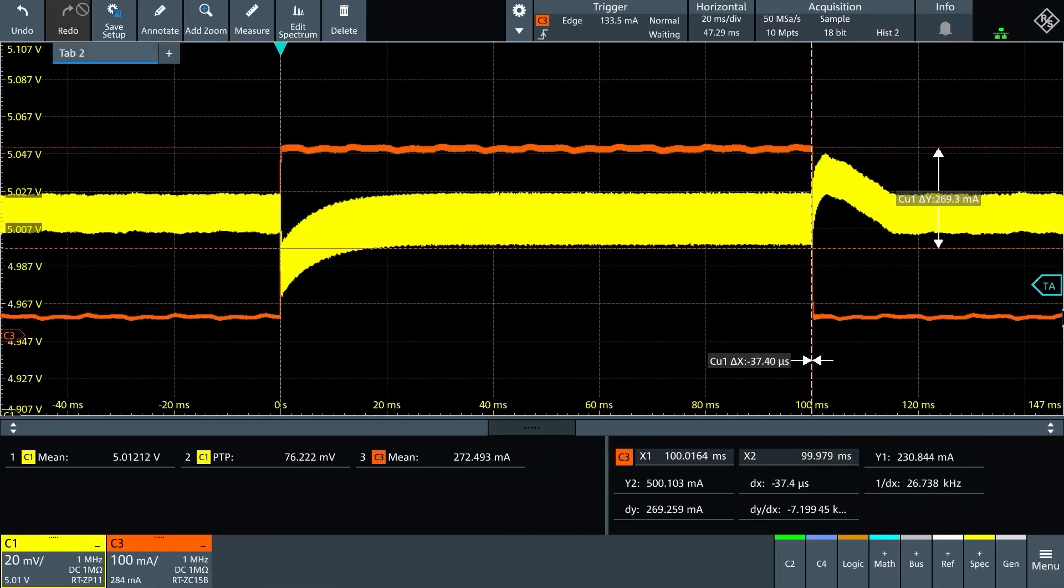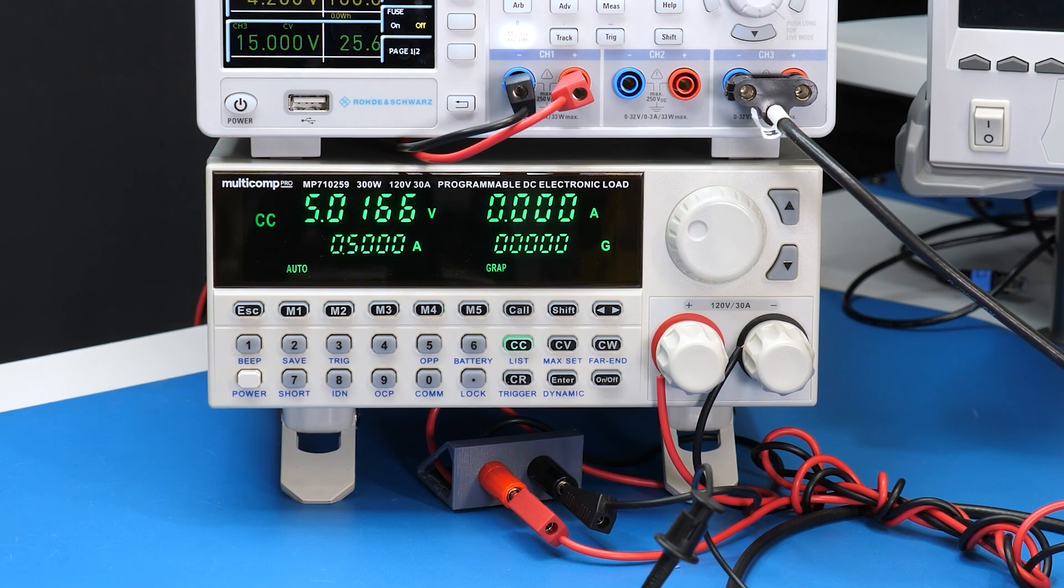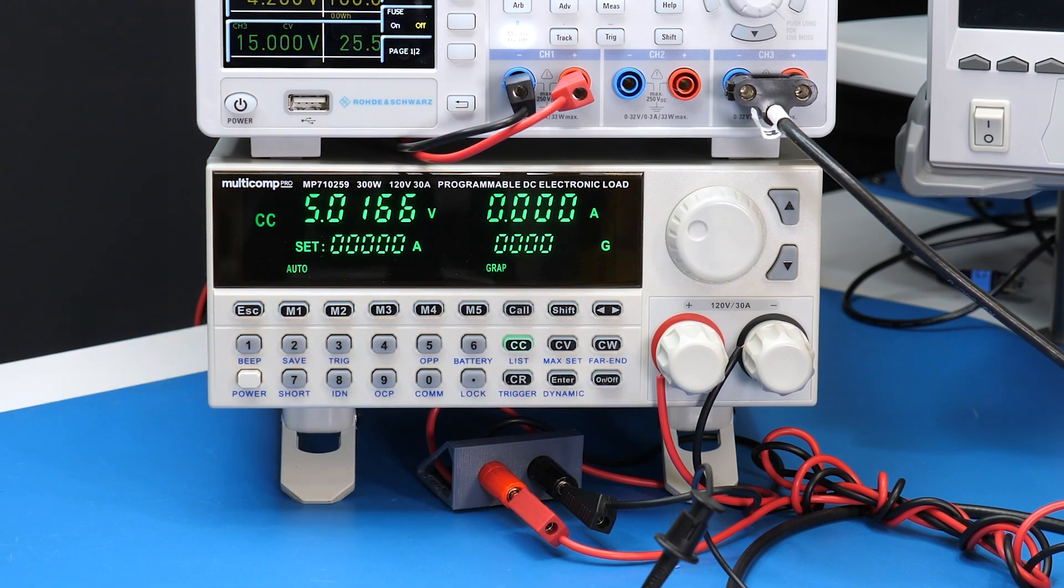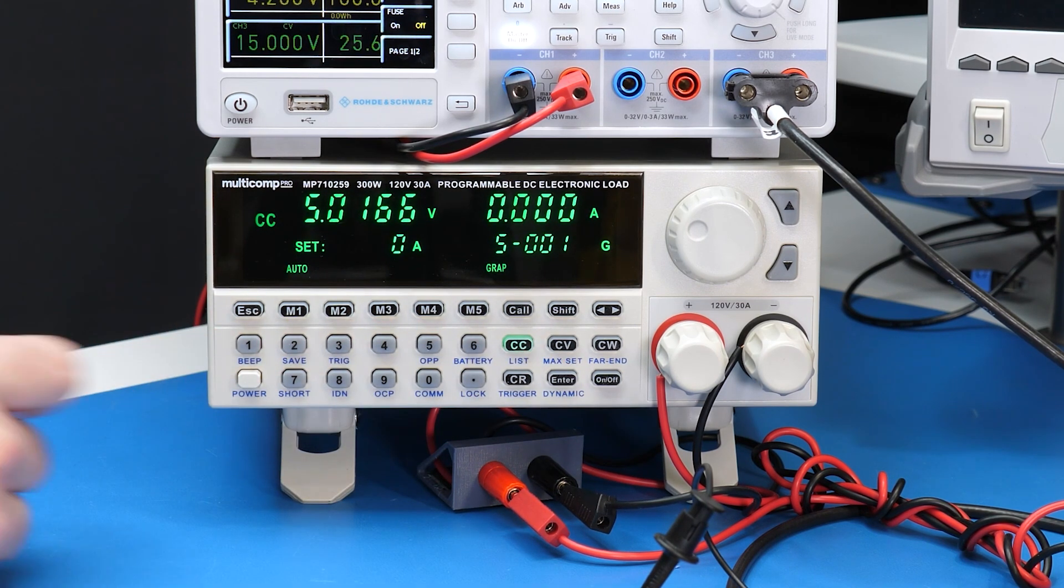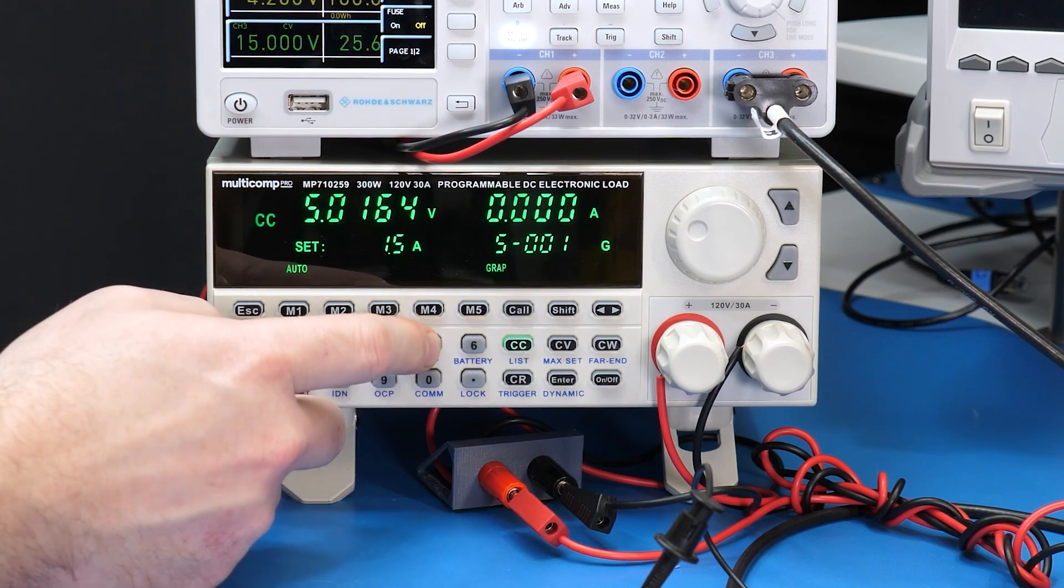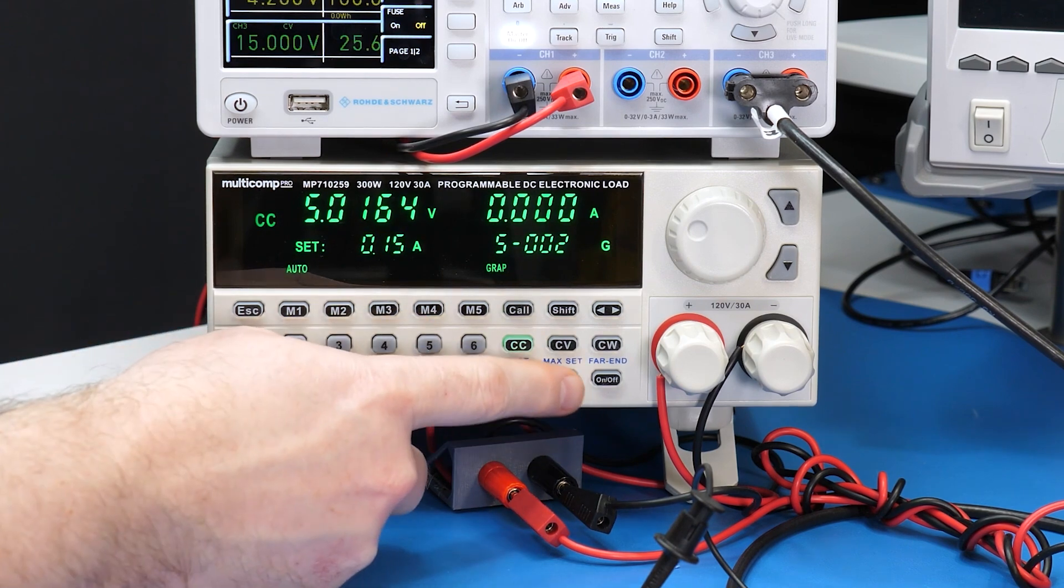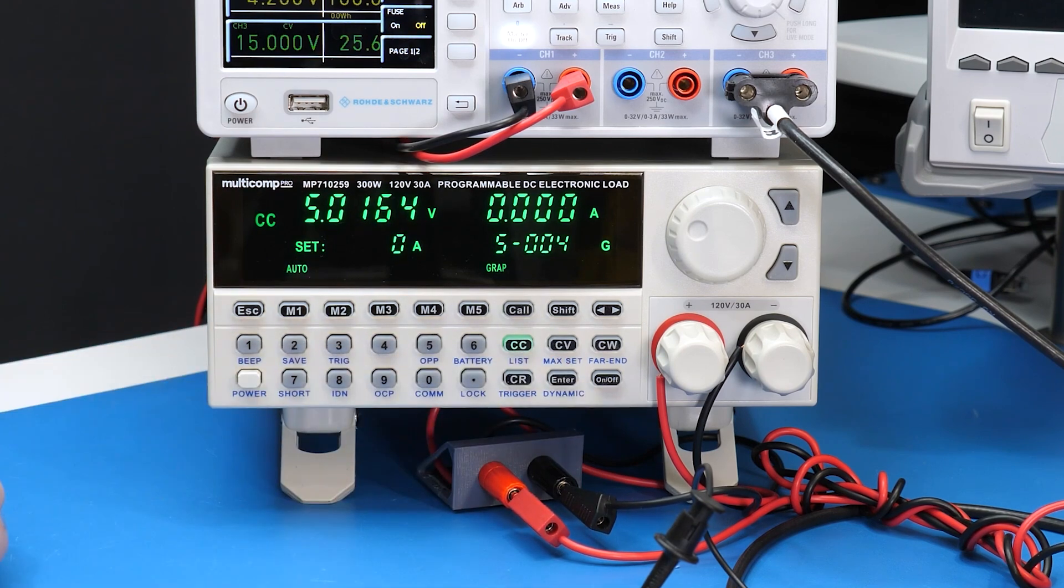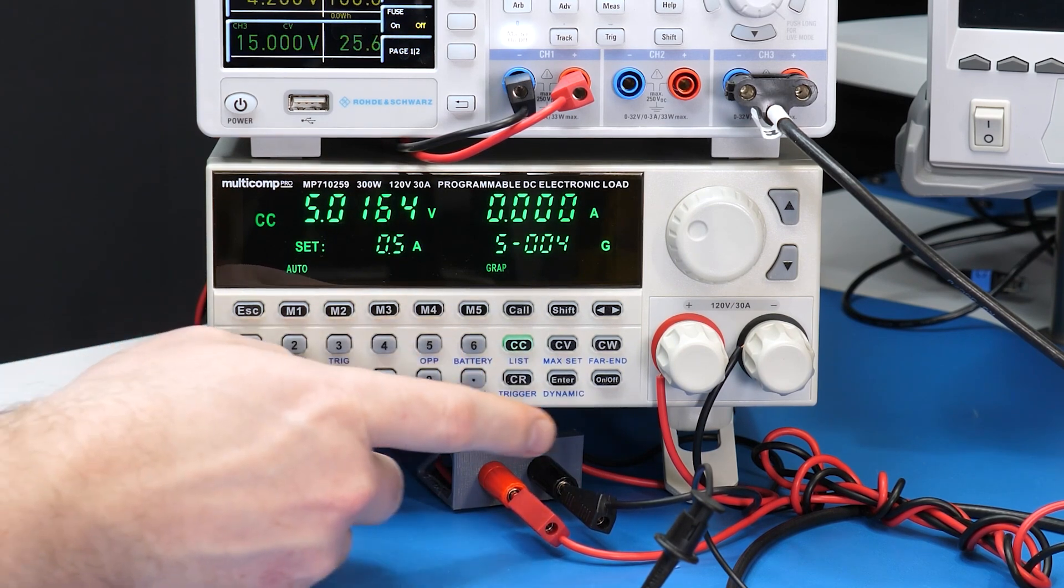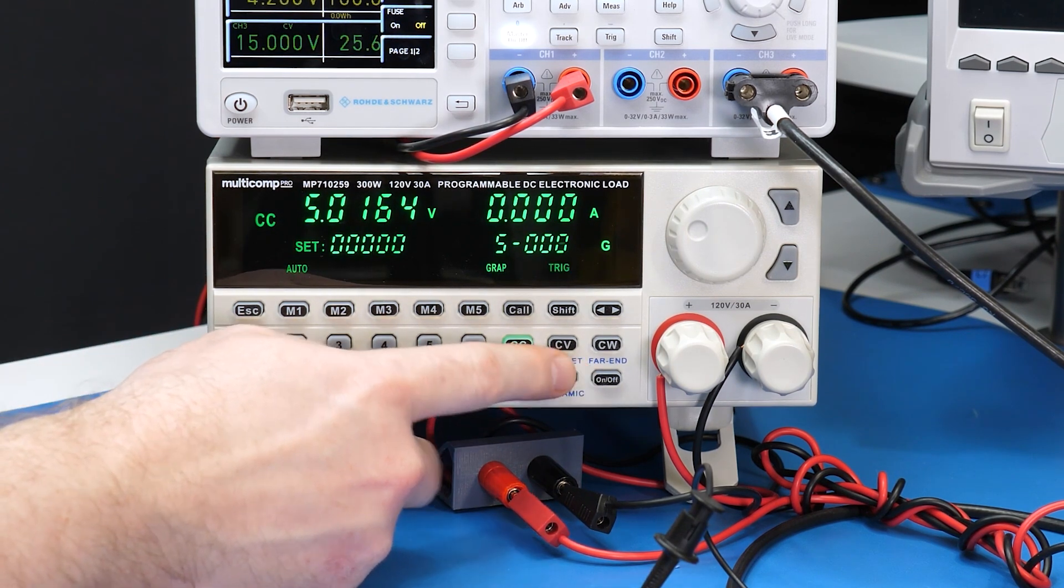When I say pulse, the end goal is something that looks like this. To get there, we have the same measurement setup as before. On the load, I hit the dynamic button. Now we need to choose a mode. In the incredible manual, it says that the number 5 sets dynamic pulse mode. Now we enter the first rate of change as 1.5 amps per microsecond, and then the second change rate at a much slower 150 milliamps per microsecond. Then we enter the first current value, so let's pick 50 milliamps, and then the second current at 500 milliamps last is the pulse time in seconds, which I picked 100 milliseconds.